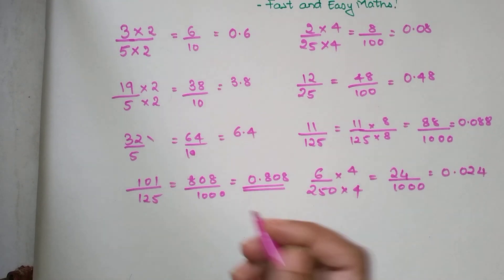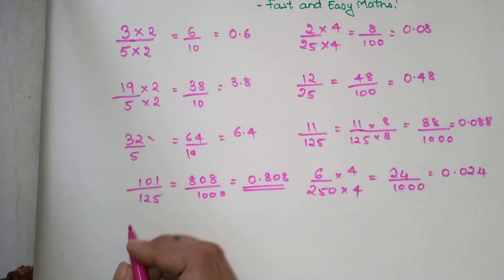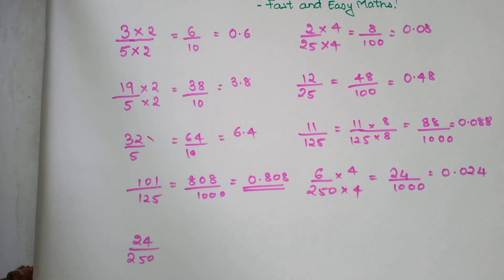When I have to divide 24 upon 250, I multiply by 4, so my answer is 76 upon 1000. My answer becomes 0.076.